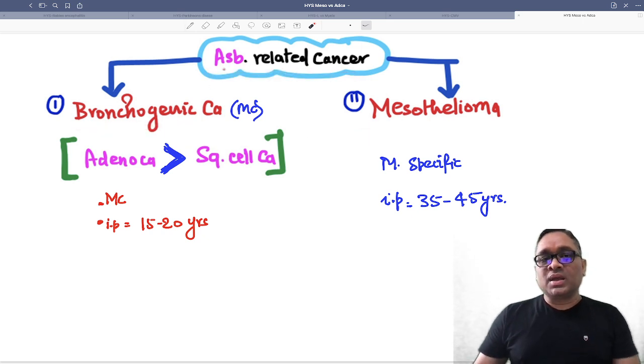First, we should know which asbestos-related cancer is most common. It is bronchogenic cancer, which is more common than mesothelioma. Mesothelioma is more specific but not more common.